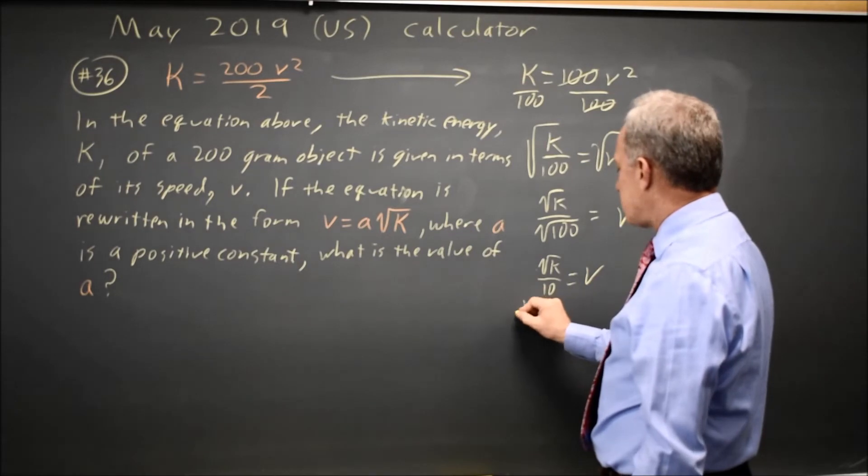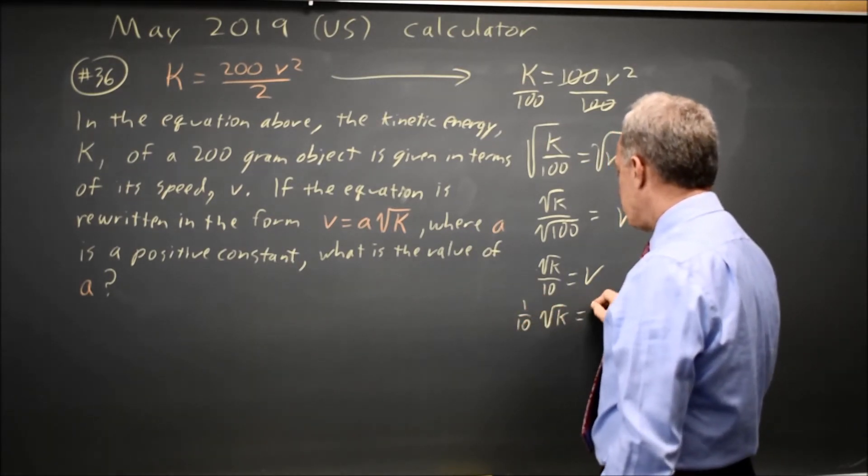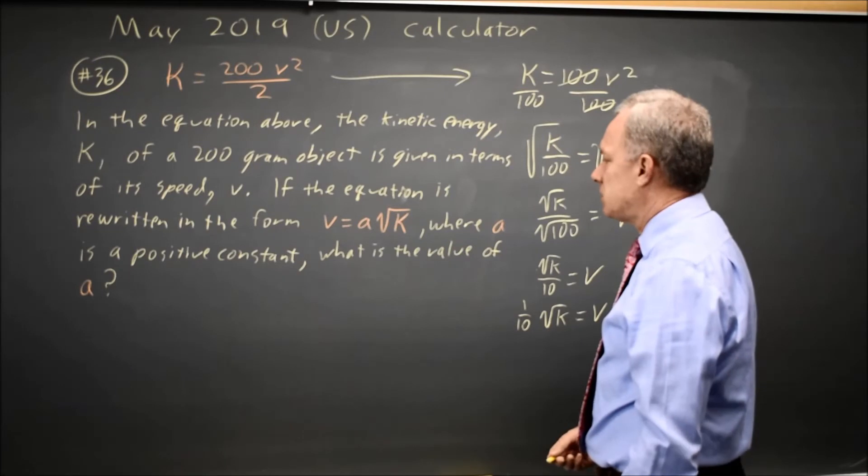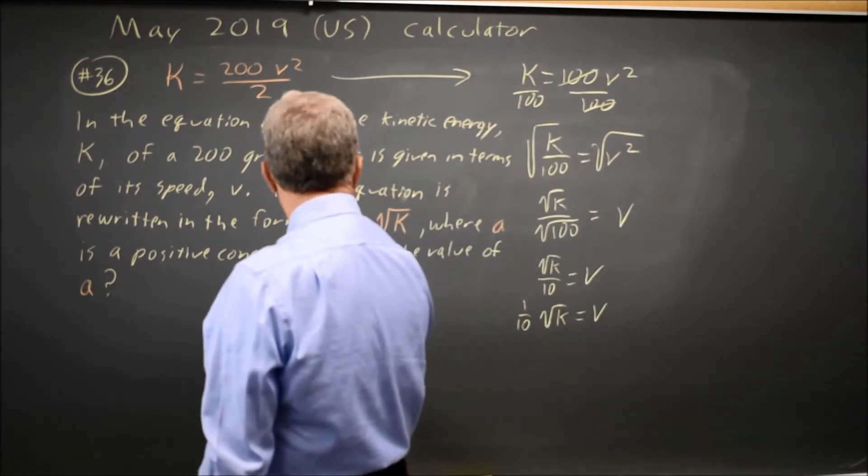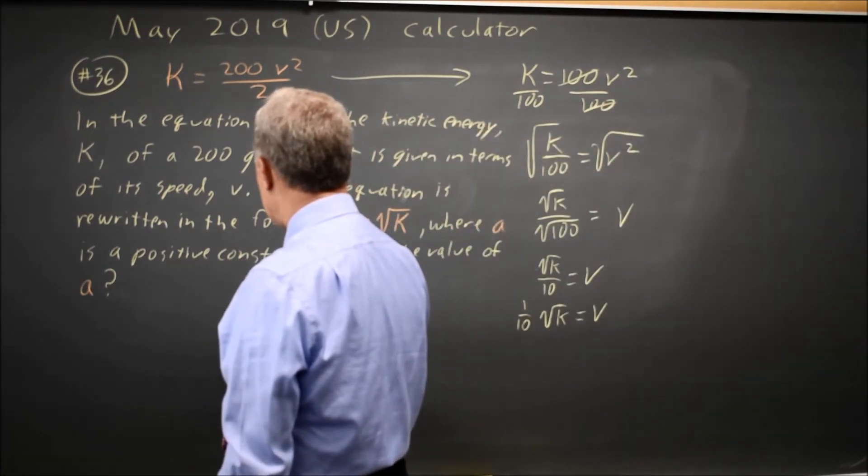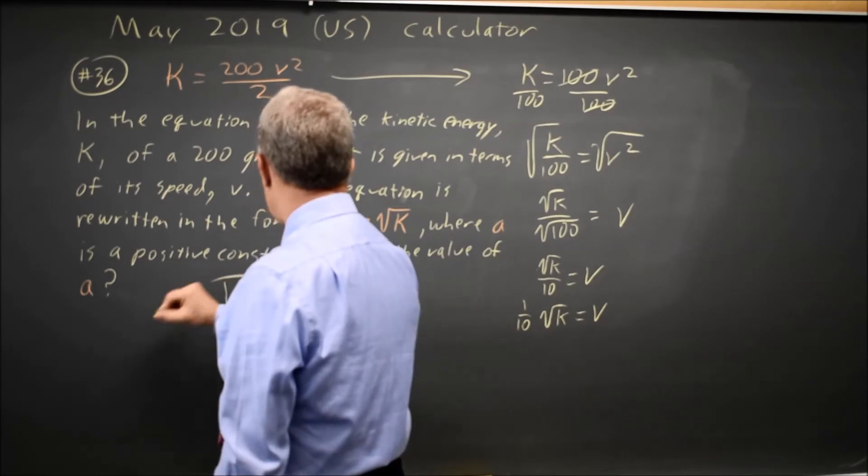Which I can write as one tenth root K equals V, or I could write that as 0.1. But I'm going to grid in 1 over 10 as my answer.